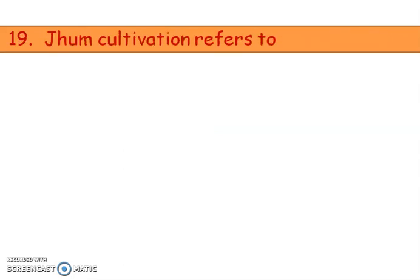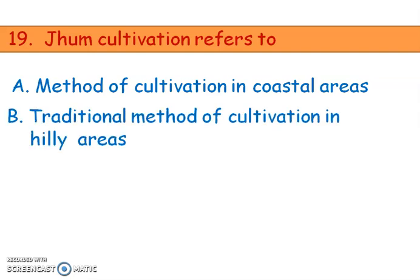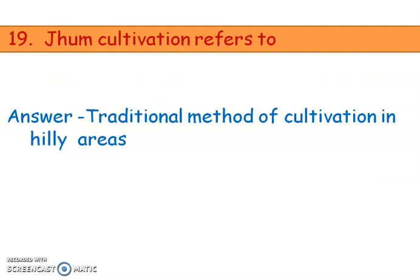Next question: Jhum cultivation refers to — options are method of cultivation in coastal areas, traditional method of cultivation in hilly areas, and method of cultivation during monsoon. The right answer is option B, traditional method of cultivation in hilly areas. This is known as Jhum cultivation.